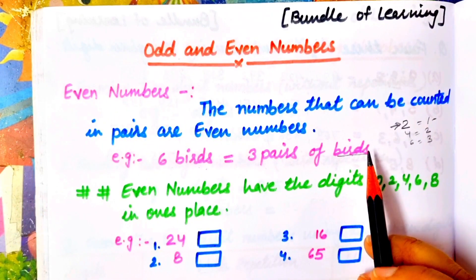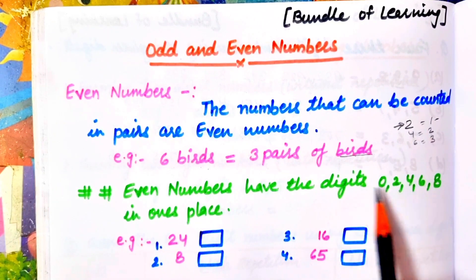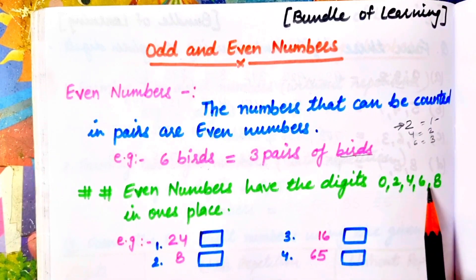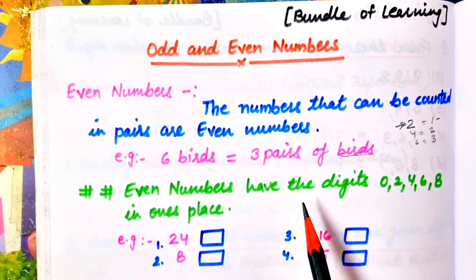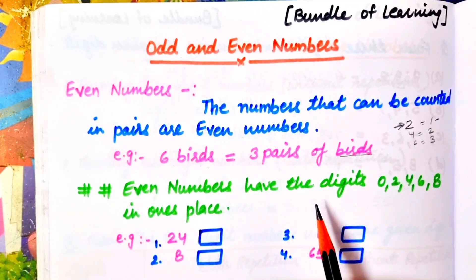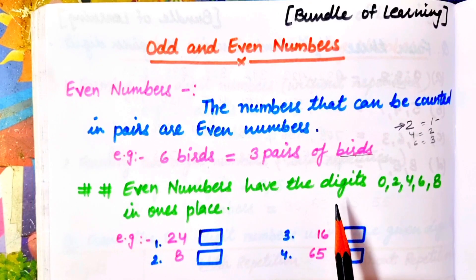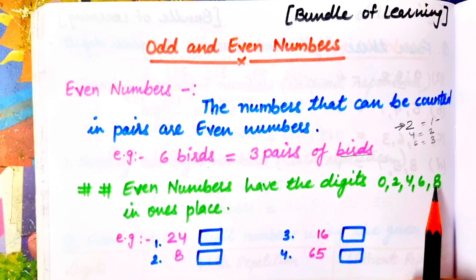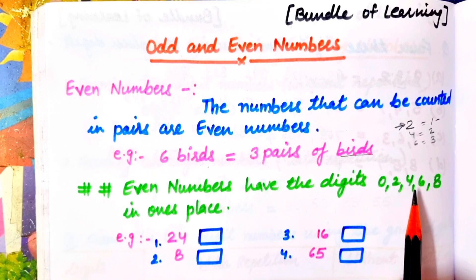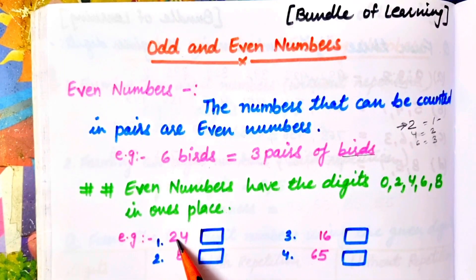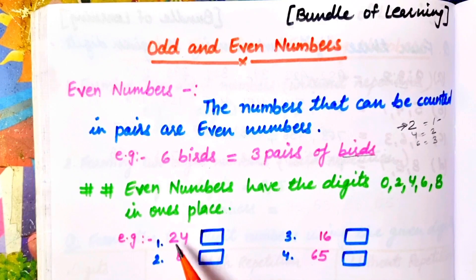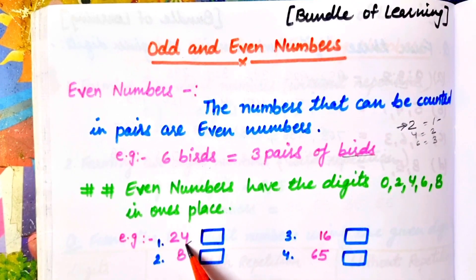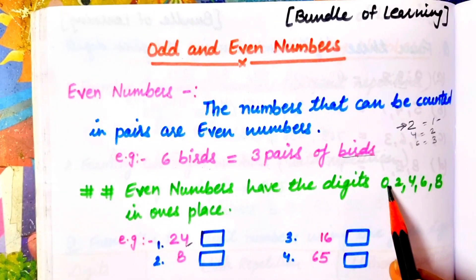In a simple way, we understand that even numbers have the digits 0, 2, 4, 6, or 8 in the ones place. For example, the number 24 — the ones place is 4, so 24 is an even number.